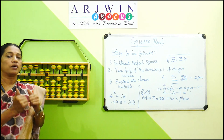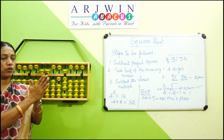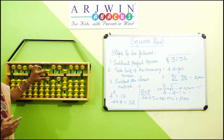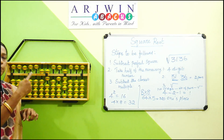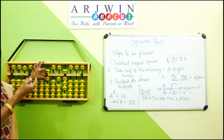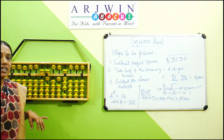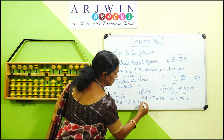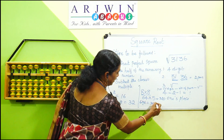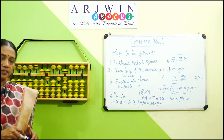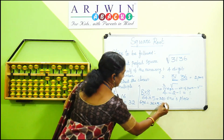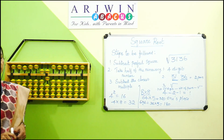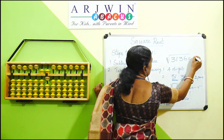Now the final step: check whether the answer is the perfect square root of 3136. Take the last digit of the answer, which is 6. Multiply 6 by itself to get 36. Then multiply 36 by 5 to get 180. We have 180 remaining on the abacus — cancel it. This confirms the answer is a perfect square. So 56 is the square root of 3136.